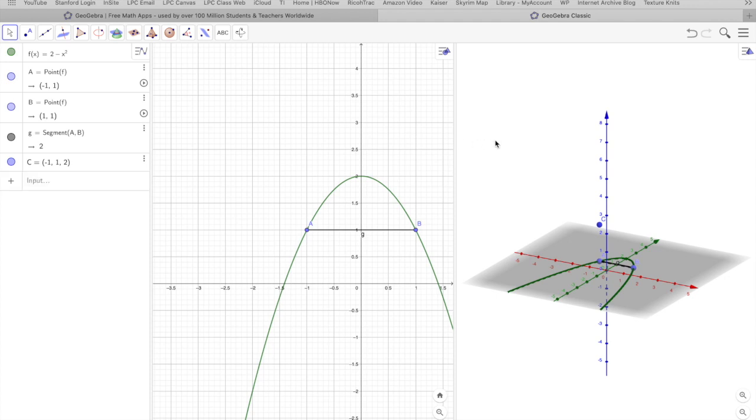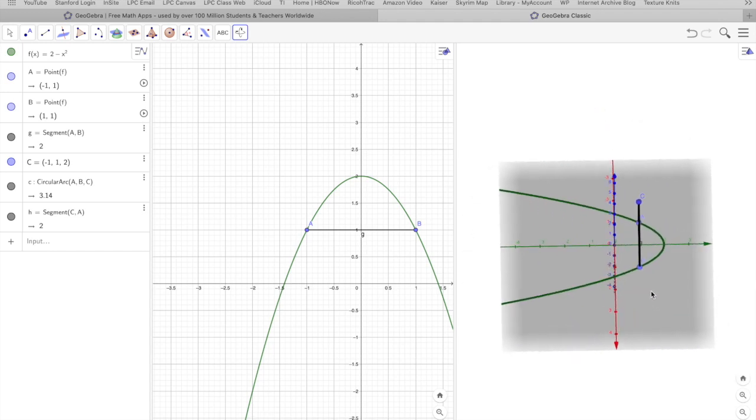Now I'm going to tap on my 3D view and the menu changes. If I'm in 2D view I have these options, if I'm in 3D view I have new options. I'm going to tap here and go to circular arc and click on point A, point B, to point C and there's my arc. It doesn't actually finish it off for me so I'm going to click a segment here and just finish it. So this is one slice of my solid.